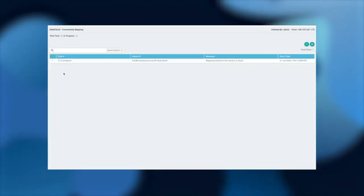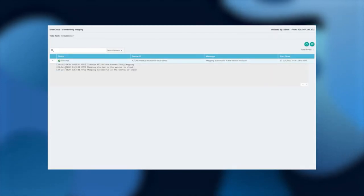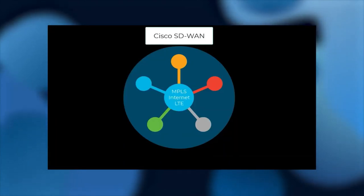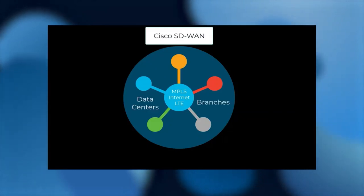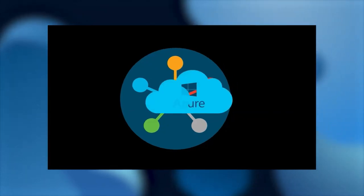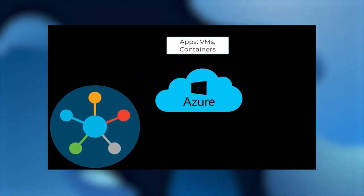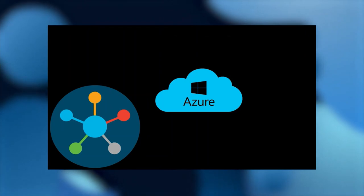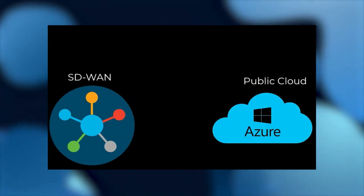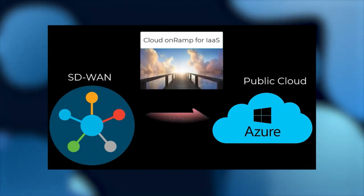That completes the successful connection of Cisco SD-WAN and Azure infrastructure. To conclude: you have Cisco SD-WAN with different transports — MPLS, Internet, LTE — with data centers and branches connected, and now public cloud with Microsoft Azure running VMs and containers. The question is how to interconnect Cisco SD-WAN and Microsoft Azure in a secure, automated, reliable way. The answer is Cloud on-Ramp for IOS — the bridge between SD-WAN and Azure.